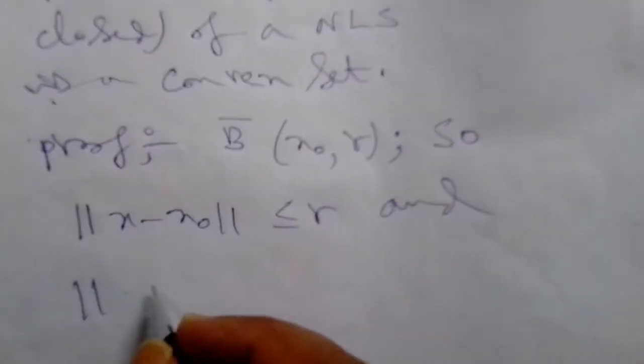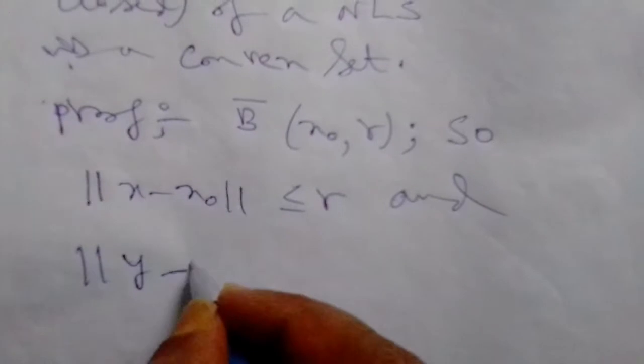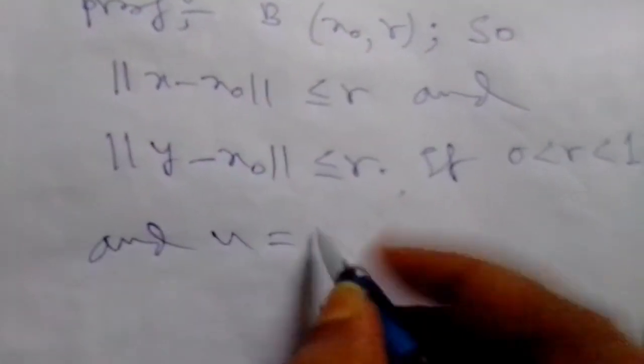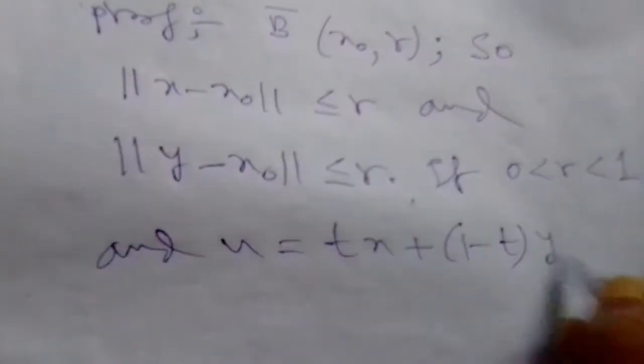And if we take several variables like y, then it is clear that ||y - x₀|| is also less than or equal to r, because if we have to prove this convex, we have to find these two variables, that is why we take y. And if we consider this radius, if 0 < t < 1 in this range we take, and if we say another variable u, that is a convex combination, that is tx + (1-t)y.